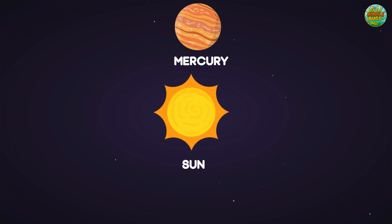Mercury. Mercury is the closest planet to the sun. It is very hot and small, and it moves very fast around the sun.